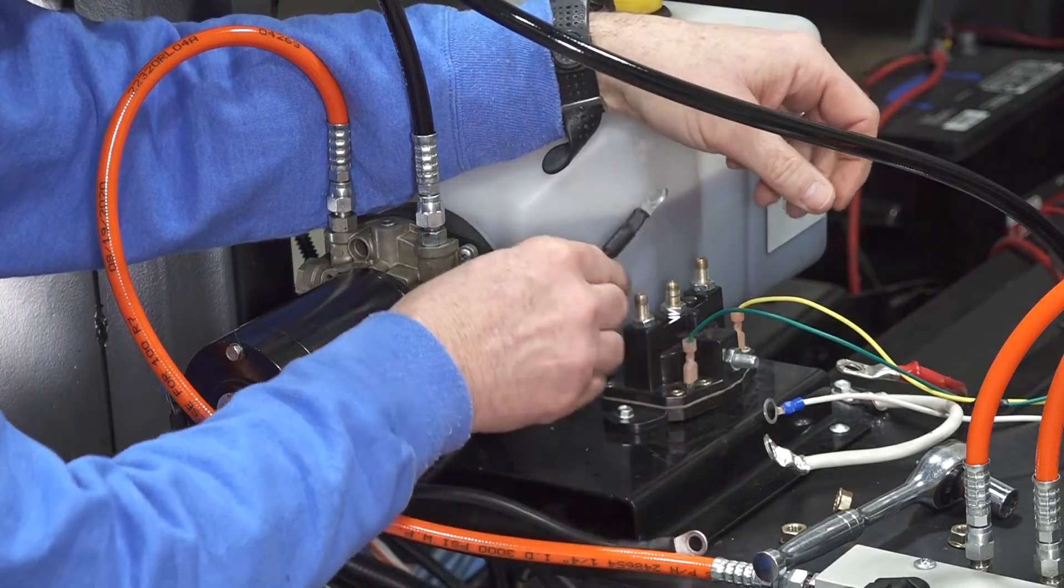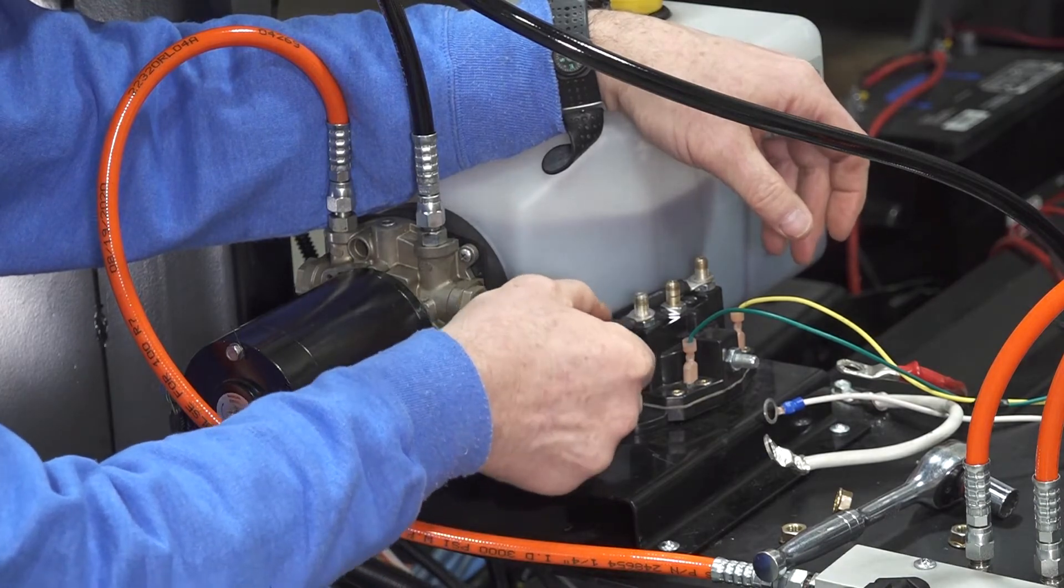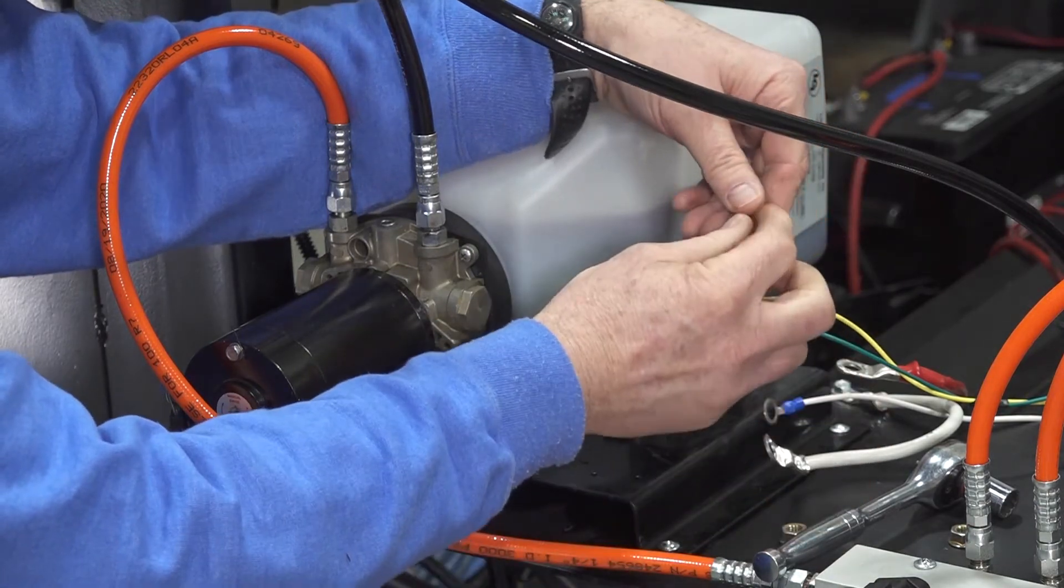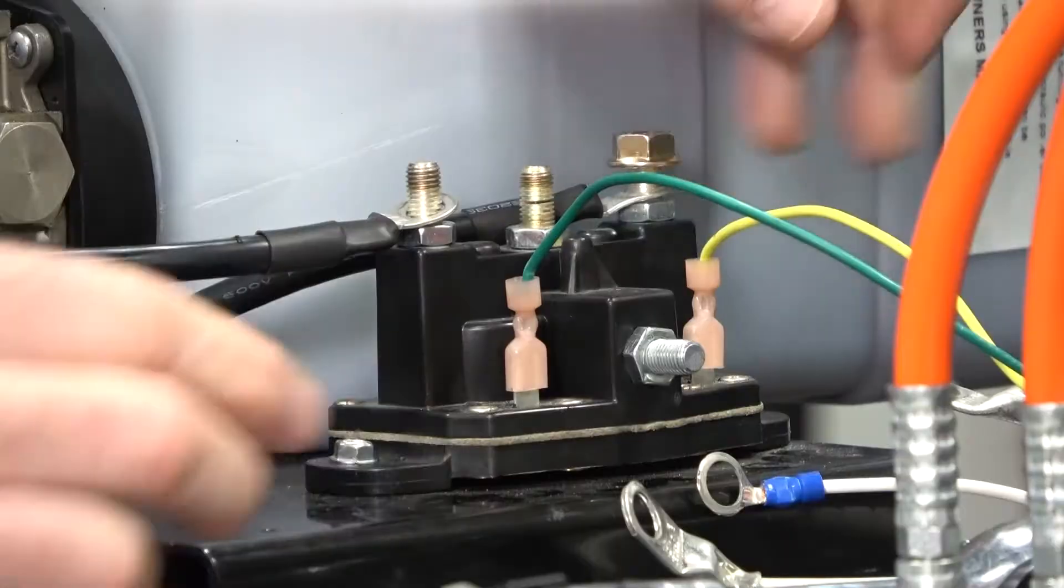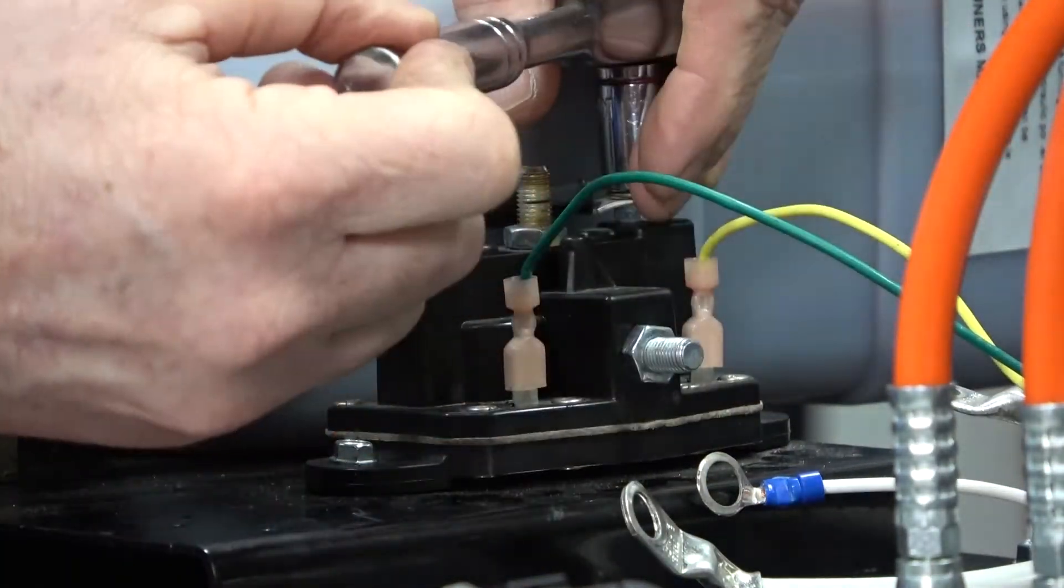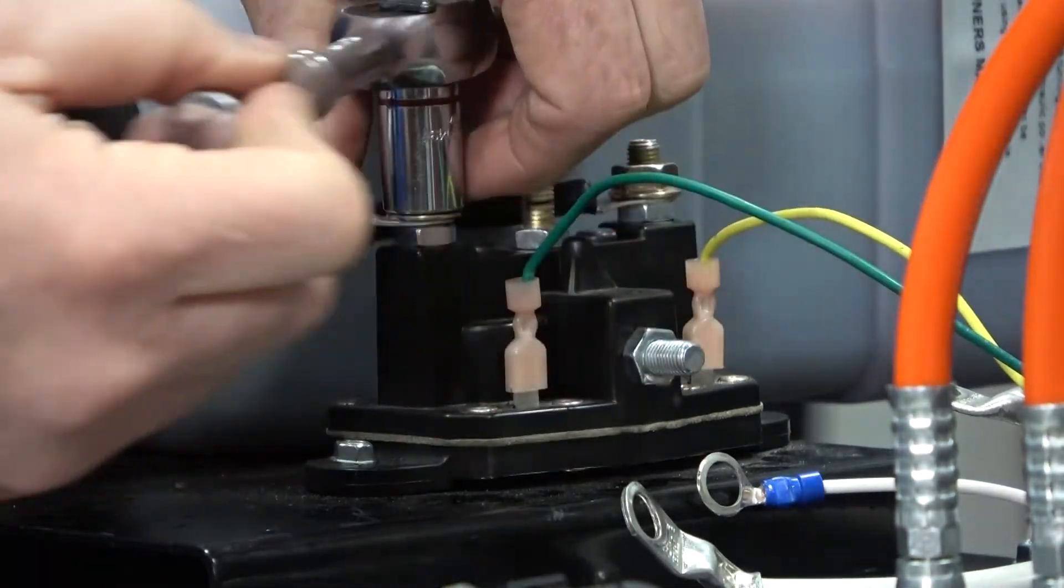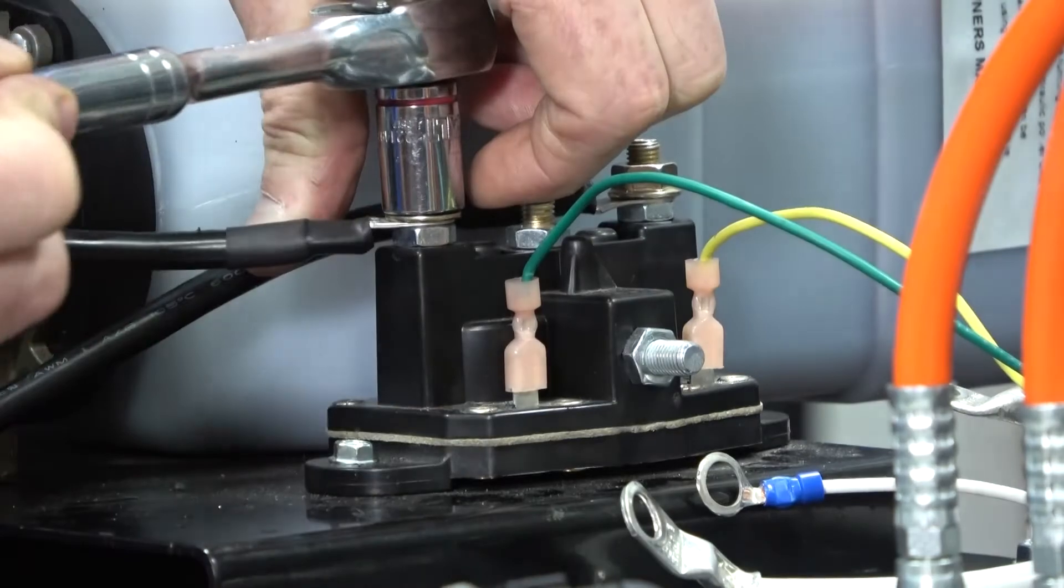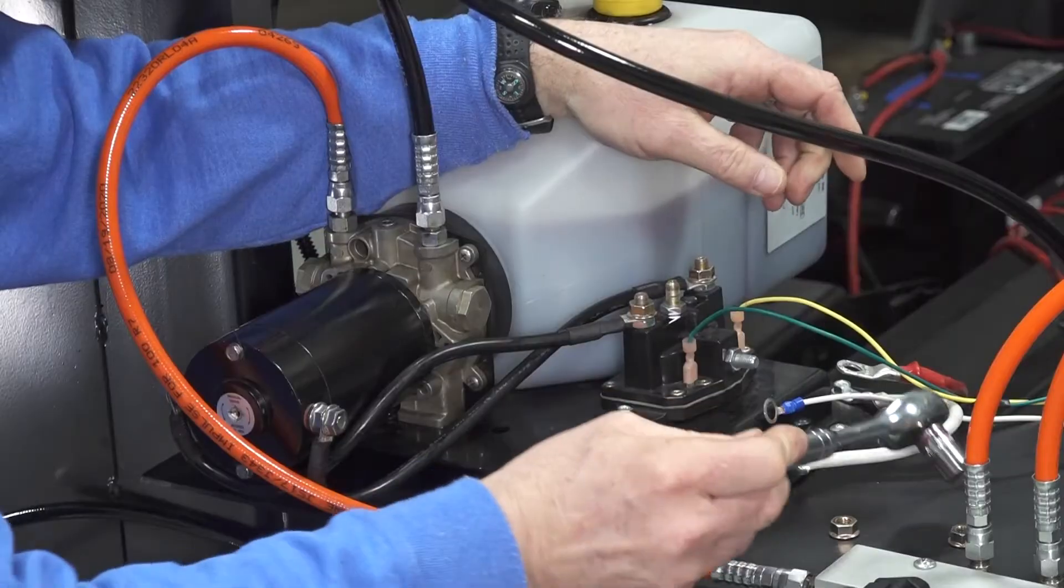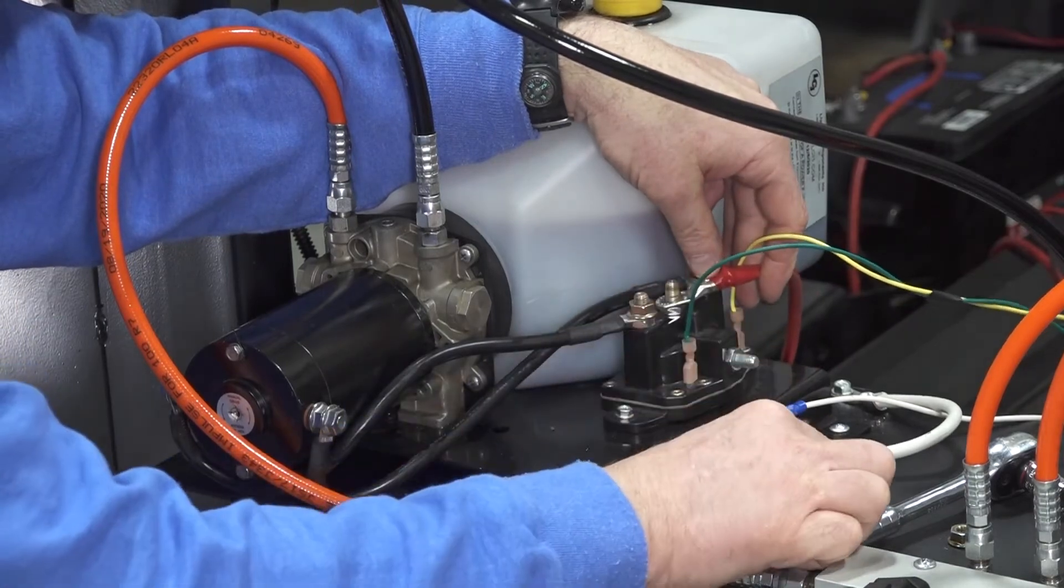Next, install the motor wires on the two top posts. Then, install the positive wire on the top center post.